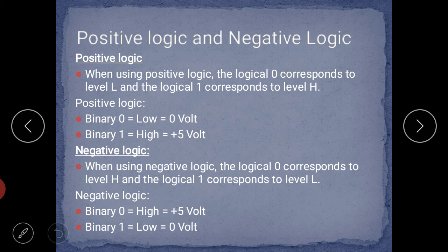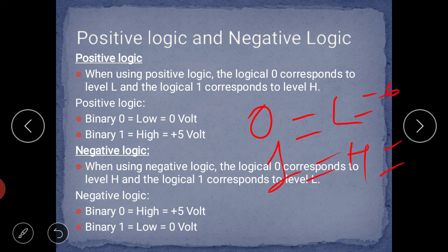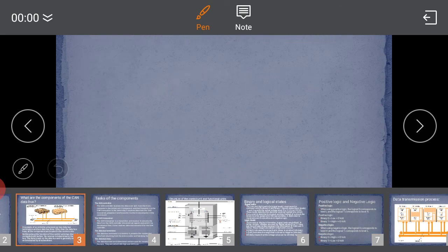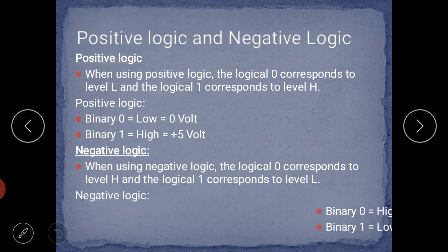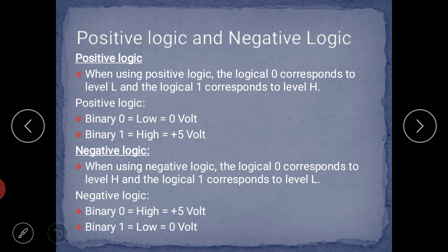Don't get confused between positive logic and negative logic. In positive logic, remember that binary number 0 stands for Low, which equals 0 volts, and 1 stands for High, which equals 5 volts. In negative logic, binary 0 equals 5 volts — that is the High case — and binary 1 stands for Low, that is 0 volts.